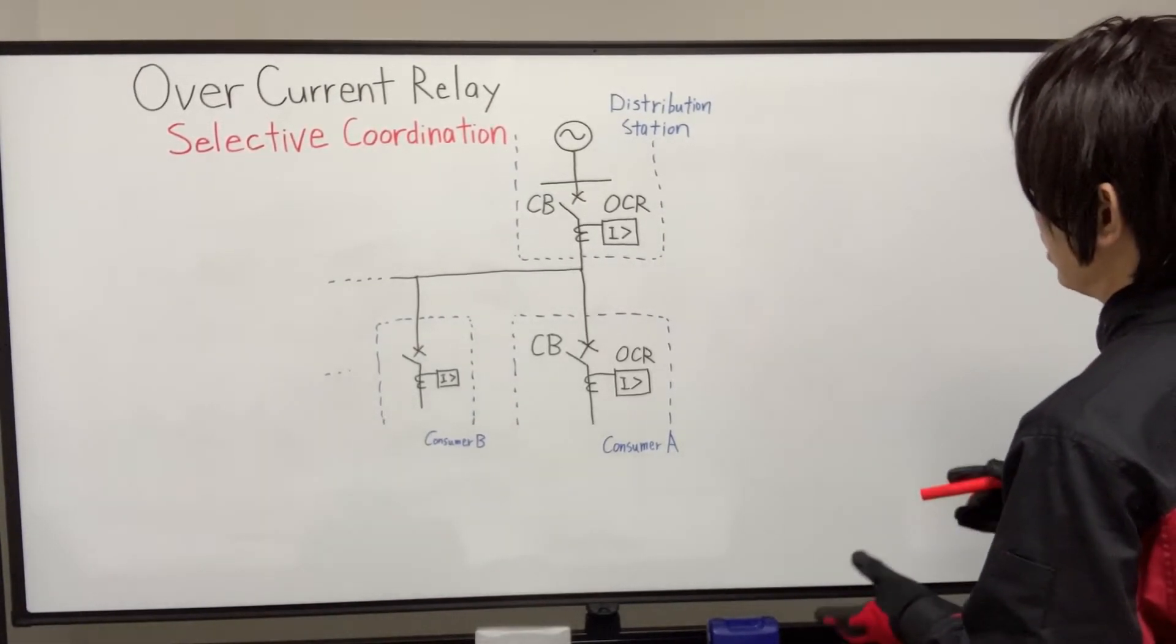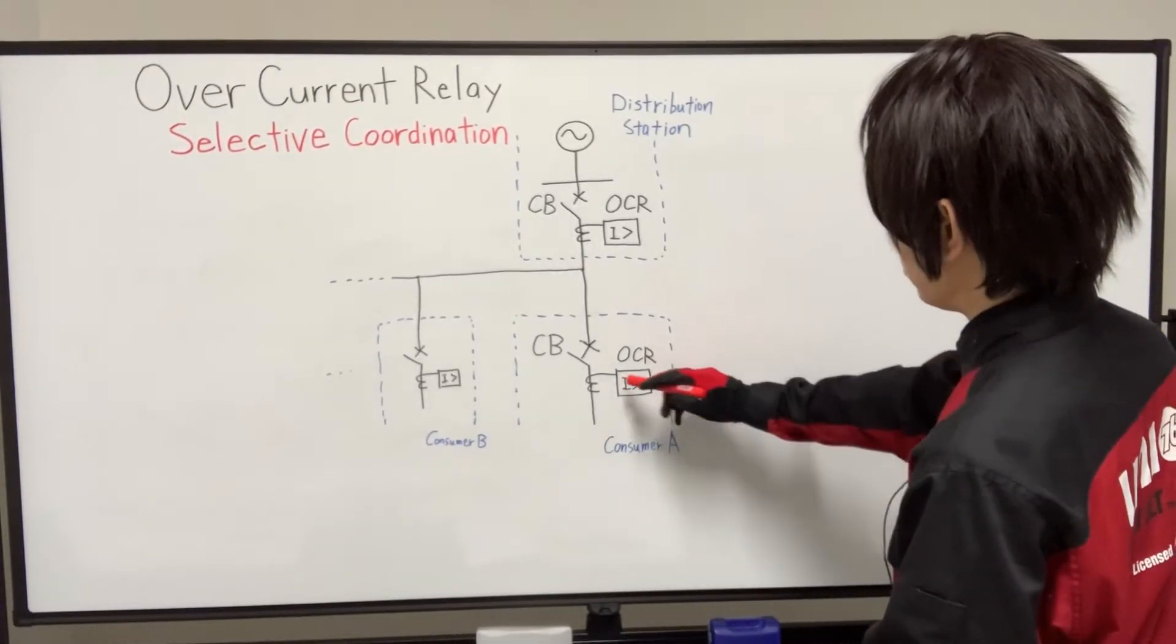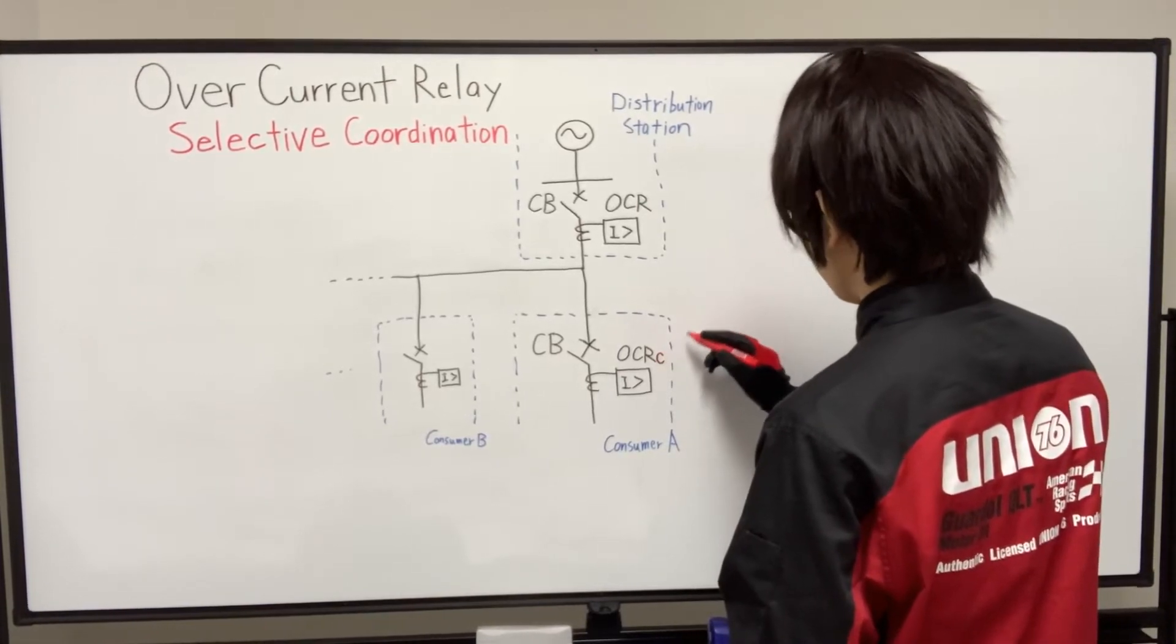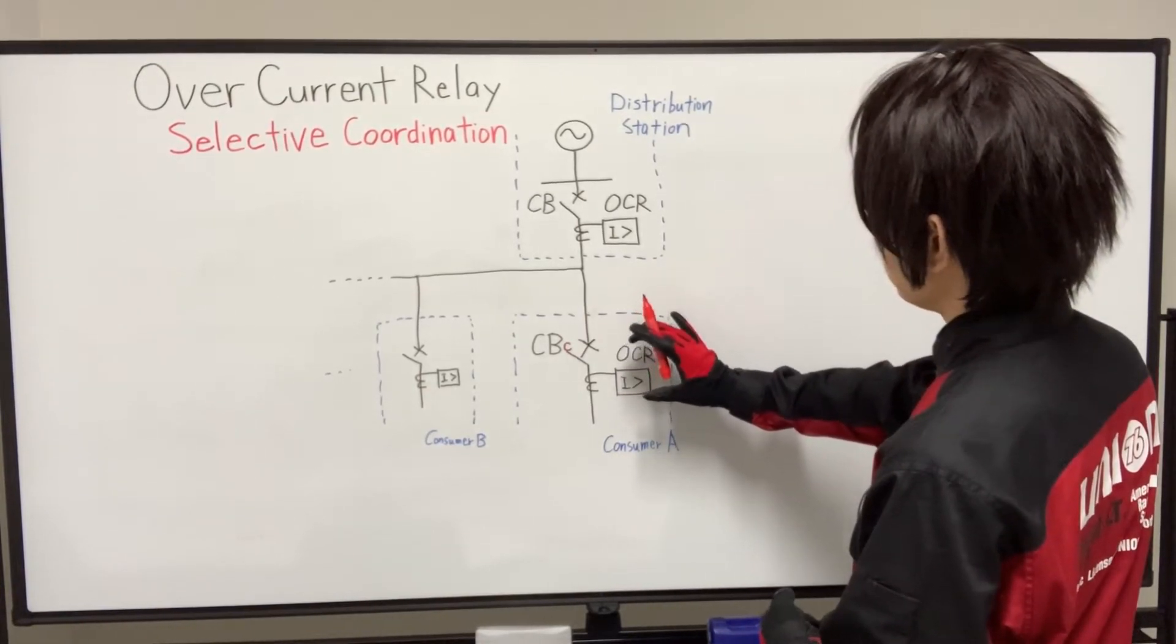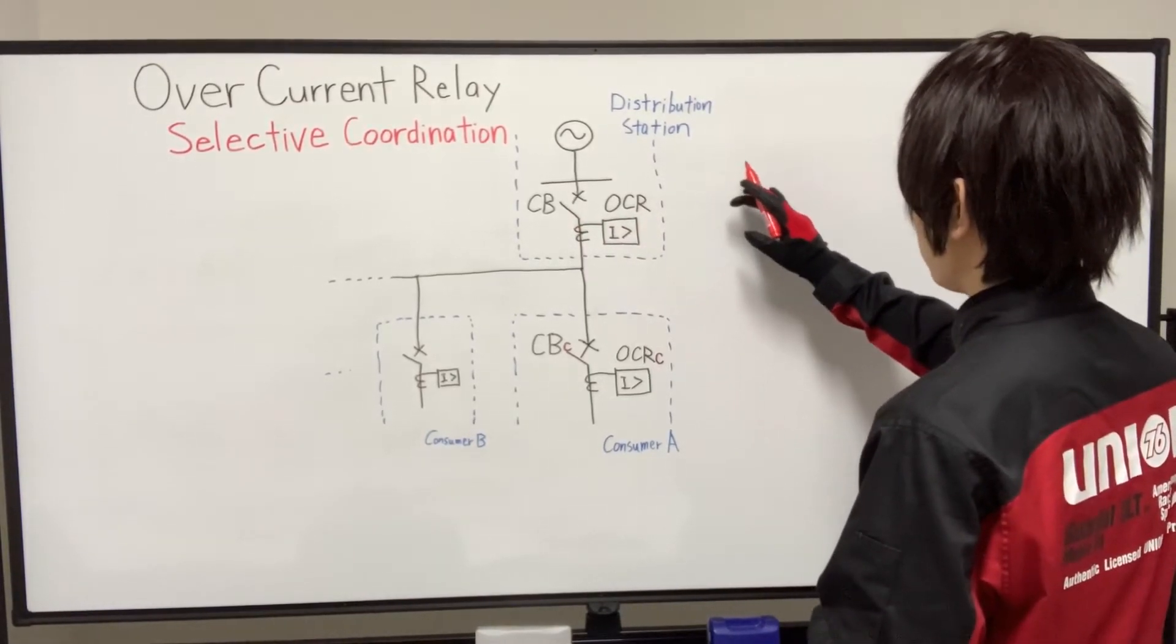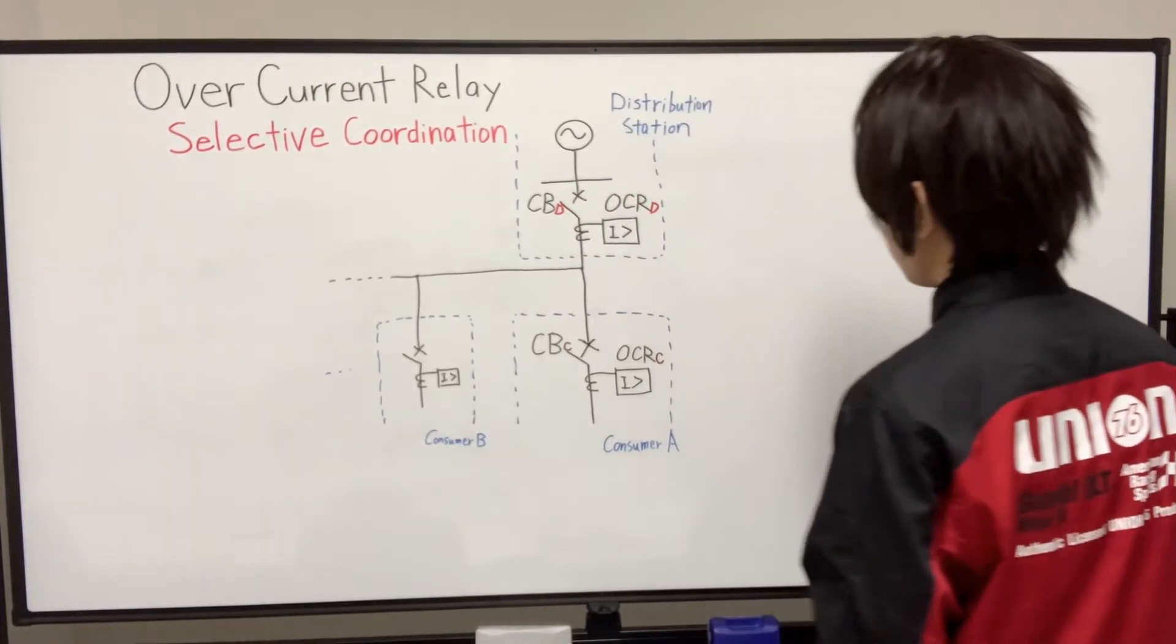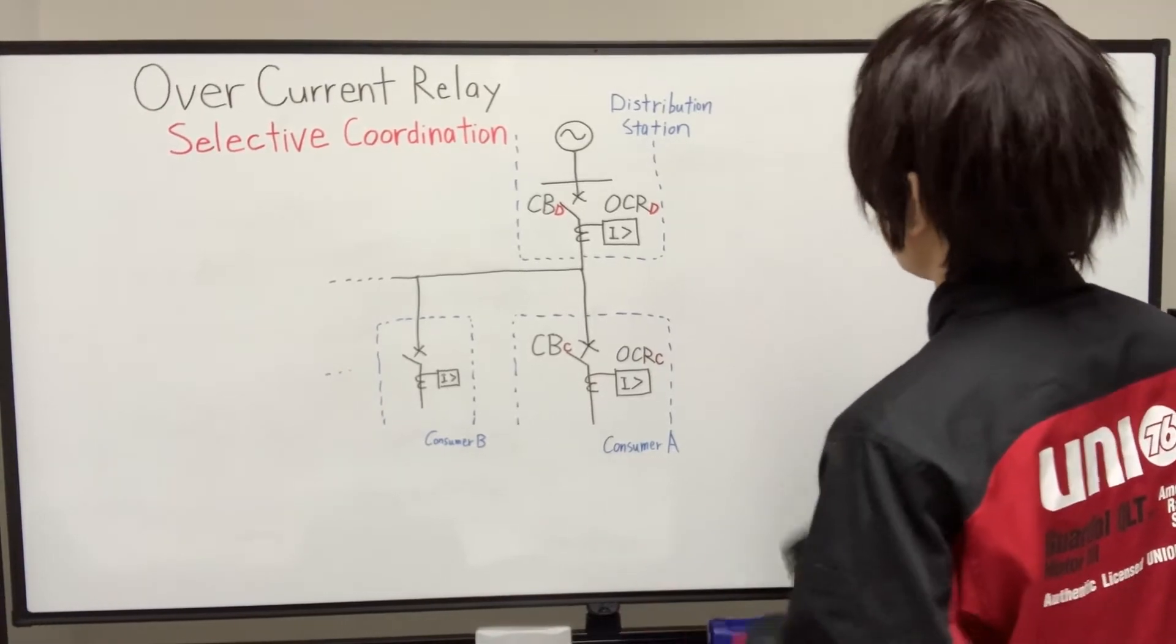So let's think selective coordination at this power system. This is our target designing overcurrent relay, let's say overcurrent relay C, consumer C, and circuit breaker C. And above these devices there are another circuit breaker and overcurrent relay which is at the distribution station. So let's say OCR D and circuit breaker D. And there are another consumers. Let's think this power system.